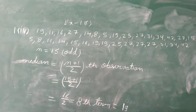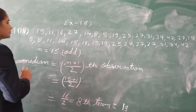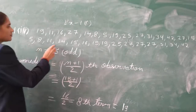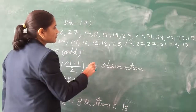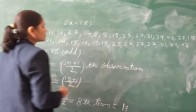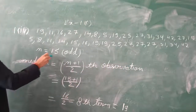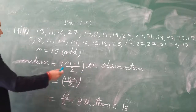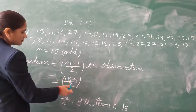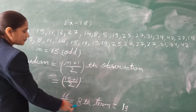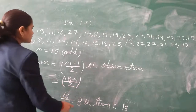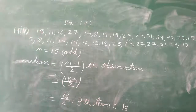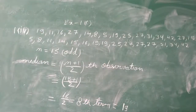Question number 1, 4th part. These are the given observations arranged in ascending order: 5, 8, 11, 14, 15, 16, 19, 19, 25, 27, 27, 27, 31, 34, 42. Total observations are 15, which is odd. We use the formula (n+1)/2: 15 plus 1 is 16, divided by 2 equals 8. So we observe the 8th term: counting 1 through 8, the 8th term is 19. So 19 is the required median.